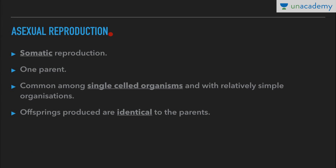Asexual reproduction. The definition of asexual reproduction is that a single organism gives rise to offspring that is similar or identical to it, with or without the involvement of gamete formation. It is also called somatic reproduction — soma means body. One parent, a single organism, gives rise to offspring.